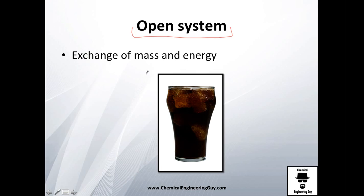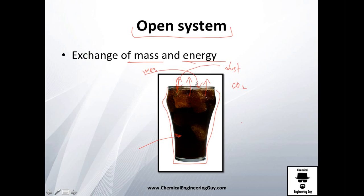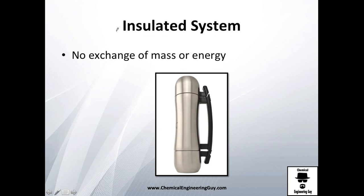An open system is very common in engineering — there is exchange of both mass and energy. For example, sticking with the beverage example: you have this glass, it is not closed. Your CO2 or carbonation is going to go out, and things like dust could go inside. You also have interaction with the outside world through heat — the ambient temperature can take away heat or add heat.